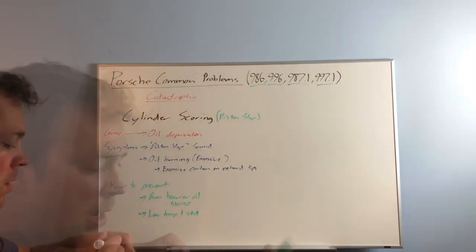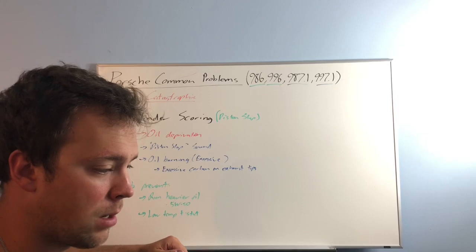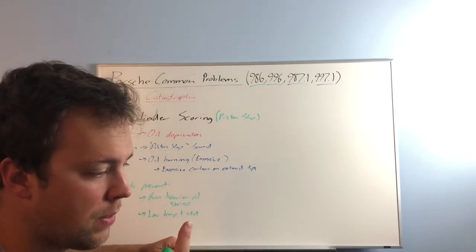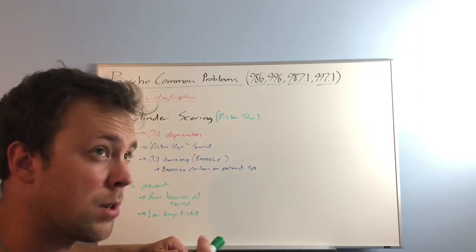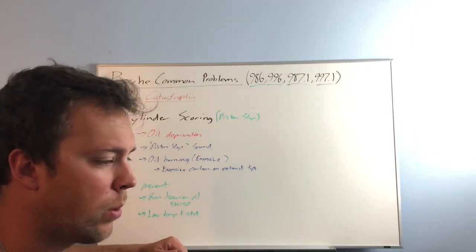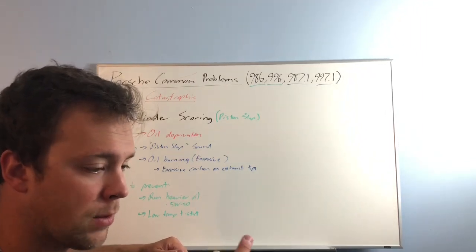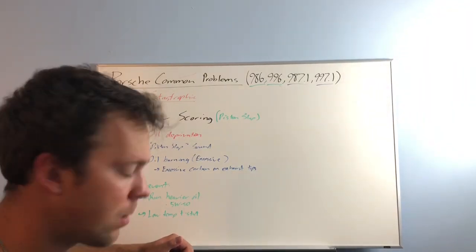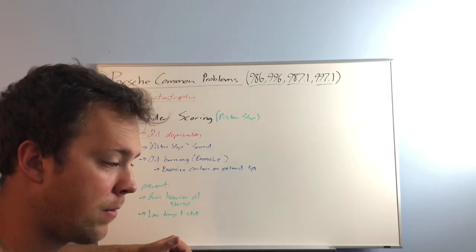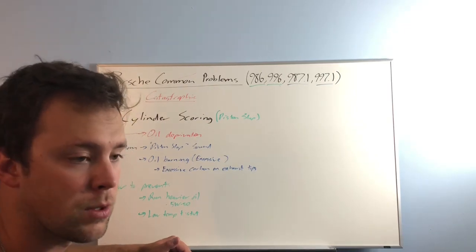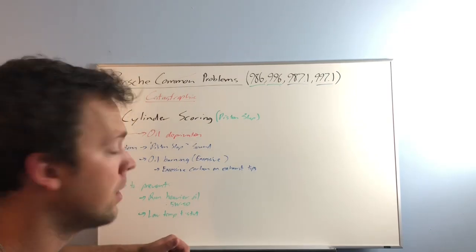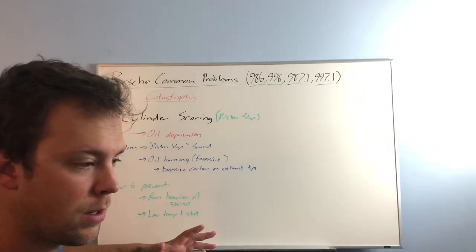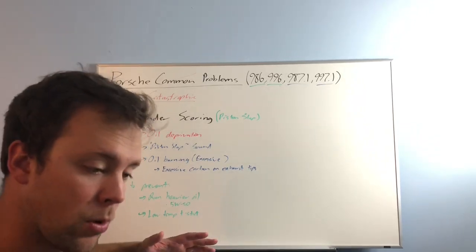Another remedy, a low temp thermostat. I believe the stock thermostat opens at 185 Fahrenheit. Correct me if I'm wrong. And the aftermarket one opens at 161. So you have a 24 degree delta there. You're sending coolant to the radiator to get cooled off that much sooner. And you do have an oil cooler on these engines, which is cooled by the coolant. So if you have 24 degree cooler coolant, therefore you have cooler oil. And cooler oil does better protection.